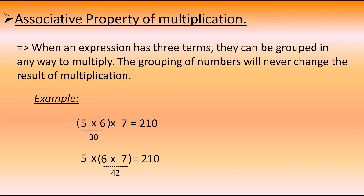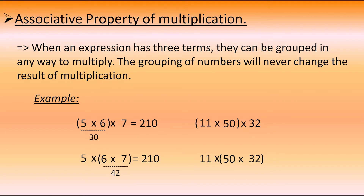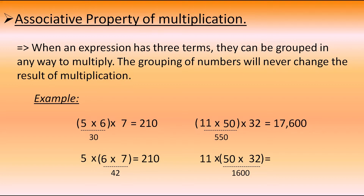Let's take one more example: 11, 50, and 32. Making a group of 11 and 50 in the first expression: 11 into 50 equals 550, and 550 into 32 equals 17,600. In the second expression: 50 into 32 equals 1,600, and 1,600 into 11 equals 17,600. From both examples, the grouping of numbers will never change the result of multiplication — that is the associative property of multiplication.